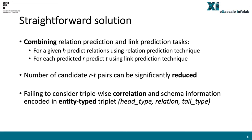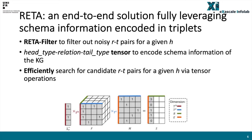However, such an approach still shows subpar performance, as it fails to fully consider the triple-wise correlation on the three elements in a triplet, in particular the schema information encoded in the entity type triplet. Against this background and to solve our instance completion problem over knowledge graphs, we propose an end-to-end solution fully leveraging schema information encoded in triplets.